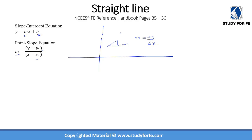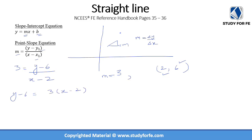Let's do one example. The slope is m = 3 and the point the line passes through is (2, 6) — 2 on the x-axis and 6 on the y-axis. Substituting: 3 = (y − y₁)/(x − x₁), so 3 = (y − 6)/(x − 2). Rearranging: y − 6 = 3(x − 2), which gives y − 6 = 3x − 6. Adding 6 to both sides, y = 3x + 0. So the y-intercept is 0 and the slope is 3.